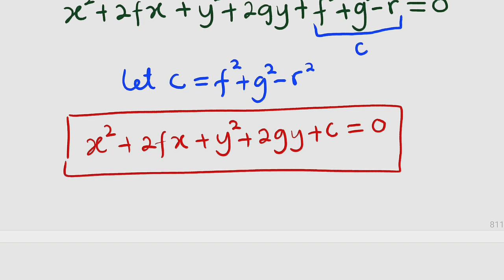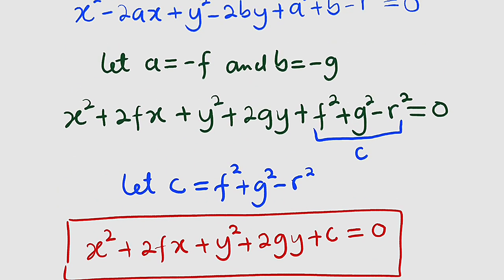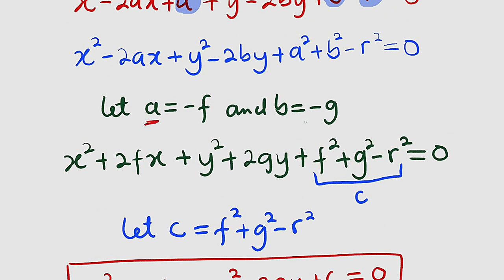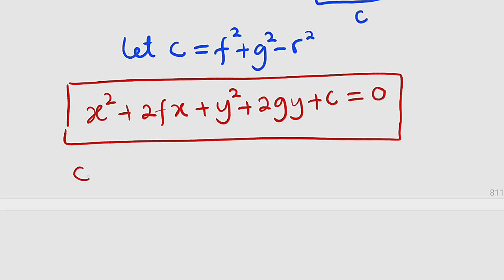The question is how can we locate the center and radius of this equation. We don't have a problem with the center because we know that a and b are the center which we replace with negative f and negative g. So the center has the coordinate (negative f, negative g).